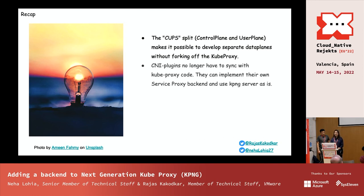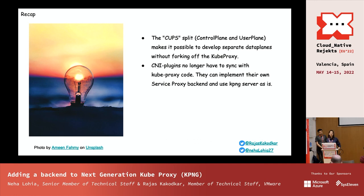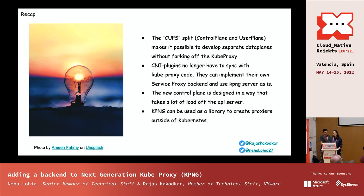Let's do a quick recap. KPNG has a decoupled architecture of control plane and data plane. If you want to write your own proxy, you can start from scratch without depending on the Kubernetes API server and maintain your own fork. CNI plugins no longer have to sync with the kube-proxy code. The Kubernetes API server also benefits from reduced load watching endpoints. This also provides a possibility for anyone who wants to start writing their own proxy that can be maintained outside of Kubernetes.